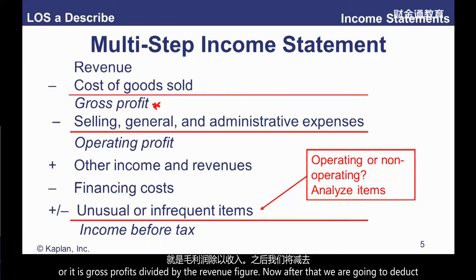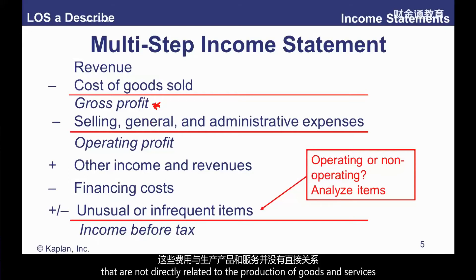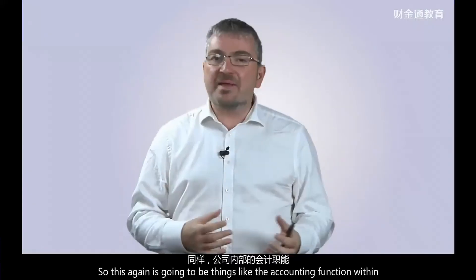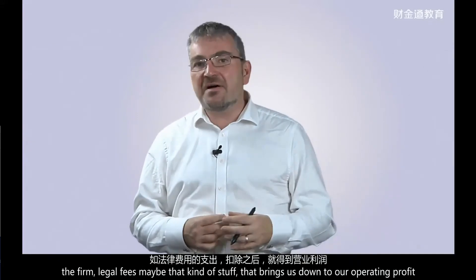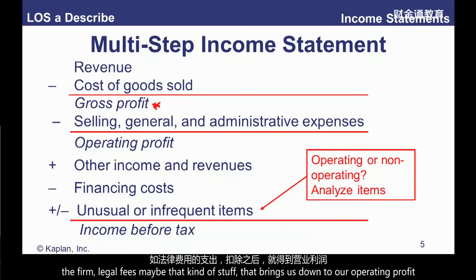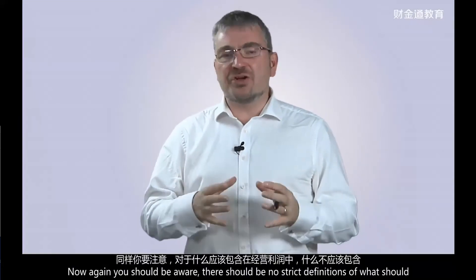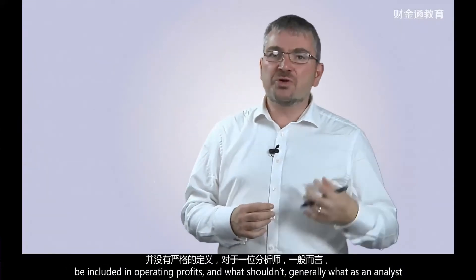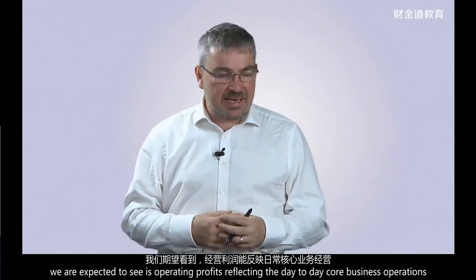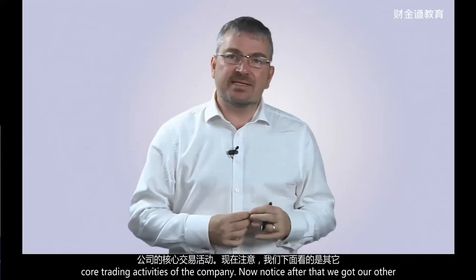Anything unsold at year end is removed from the income statement and transferred to the balance sheet as inventory. Revenue less cost of producing goods and services brings us down to gross profit. Gross profit margin is simply gross profit divided by revenue. After that, we deduct selling, general and admin expenses — all day-to-day costs of running the business not directly related to production, such as accounting, legal fees — bringing us down to operating profit.